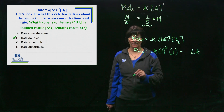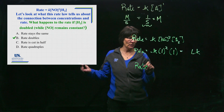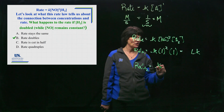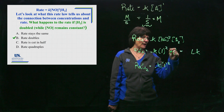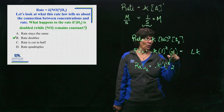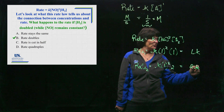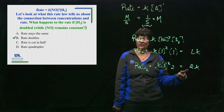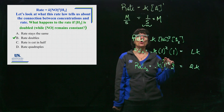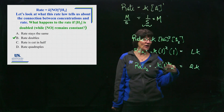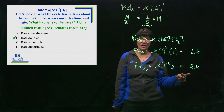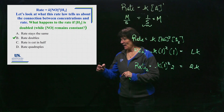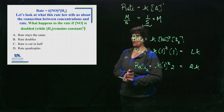The second time, we double the concentration of H₂ but keep NO the same: 1² × 2 = 2k. So as we doubled the hydrogen, it doubled the rate. That's what first order does — doubling the concentration doubles the rate, tripling triples it, cutting in half halves it.